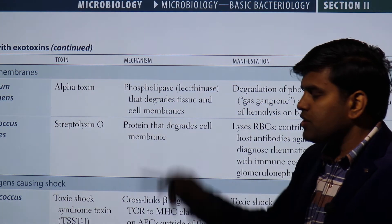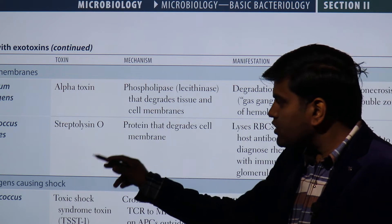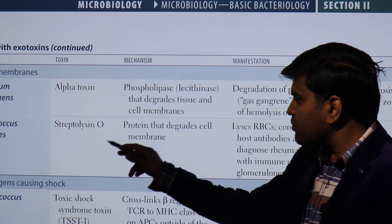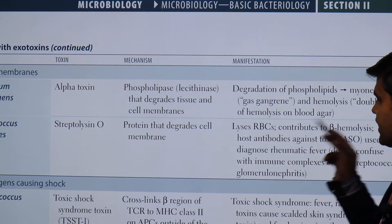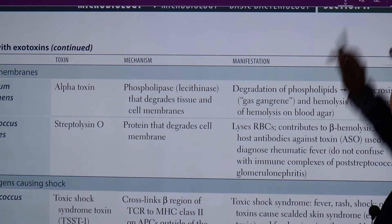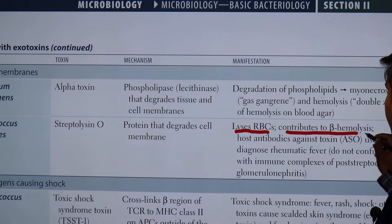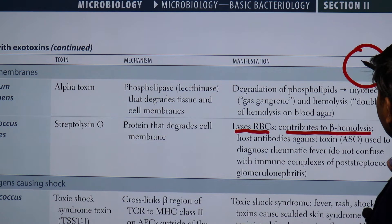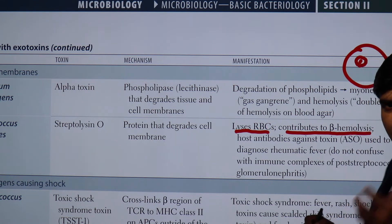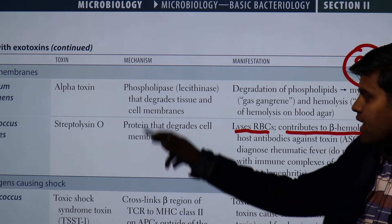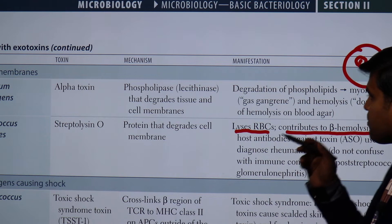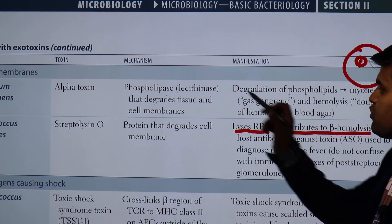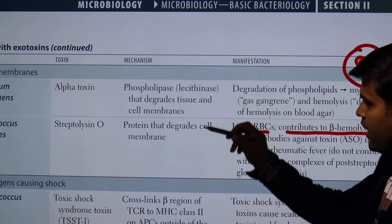Another common infection is caused by Streptococcus pyogenes, which releases a toxin known as streptolysin O. Streptolysin O is a protein that degrades the cell membrane and lyses RBCs. When Streptococcus pyogenes is grown on a blood agar plate, there is a clear zone of hemolysis around the bacteria — this is beta hemolysis — because the streptolysin O has lysed the surrounding RBCs, clearing that area.